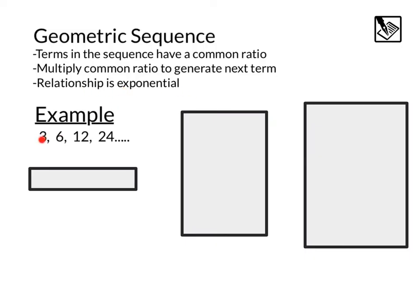Here we have a sequence, 3, 6, 12, 24. You might notice that the common ratio is 2. That means we multiply 2 to the last number. 3 times 2 is 6, 6 times 2 is 12, 12 times 2 is 24. That's our common ratio.